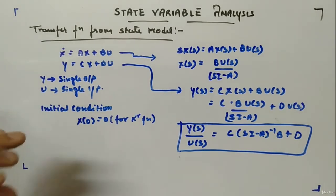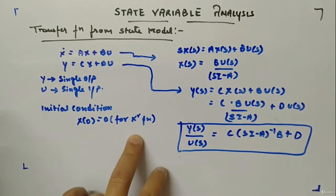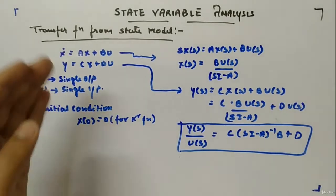Now initial condition also I am assuming equal to zero, that is x(0) is equal to zero. That is, for transfer function we know that we don't take initial conditions in transfer function, that means we assume it to be zero.